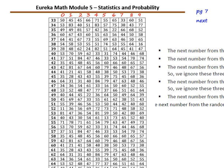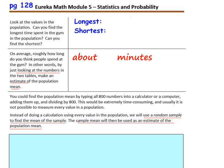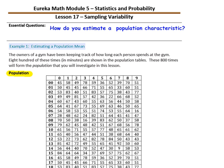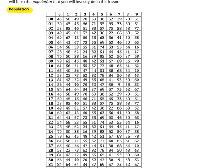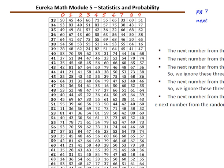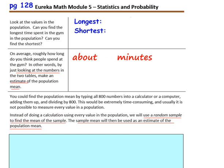This is the rest of the data from the 800 people going to the health club. Look at the values in the population. Can you find the longest time spent in the gym in the population? And can you find the shortest? We want the longest time and the shortest time. The longest time is 92 minutes and the shortest time is 9 minutes.